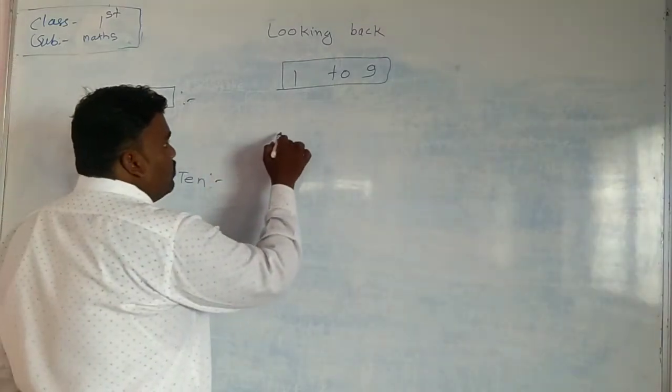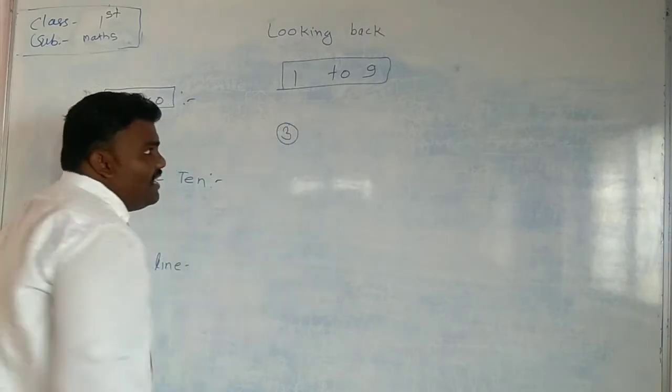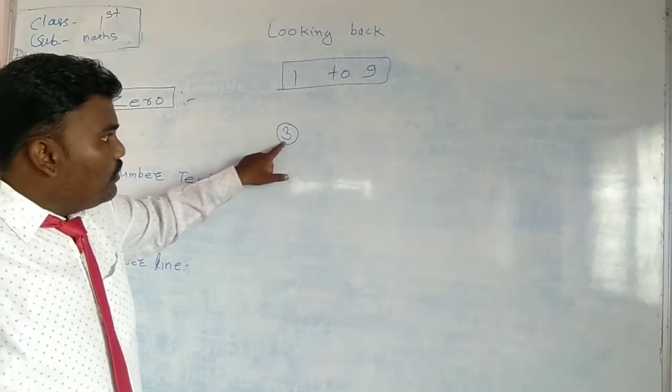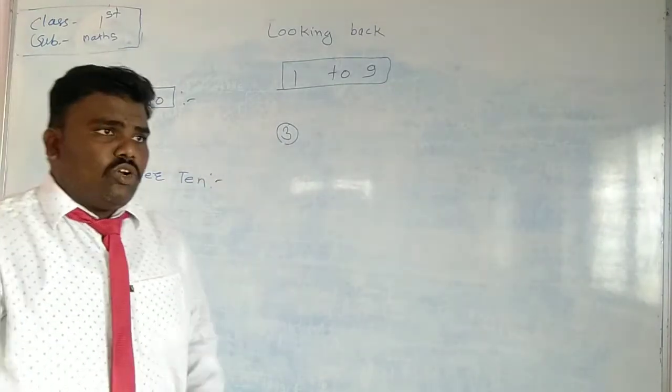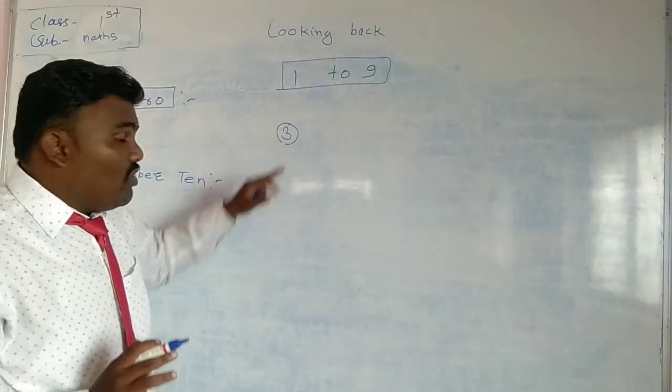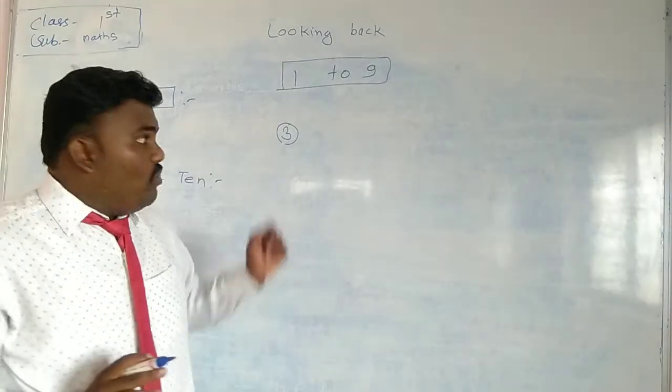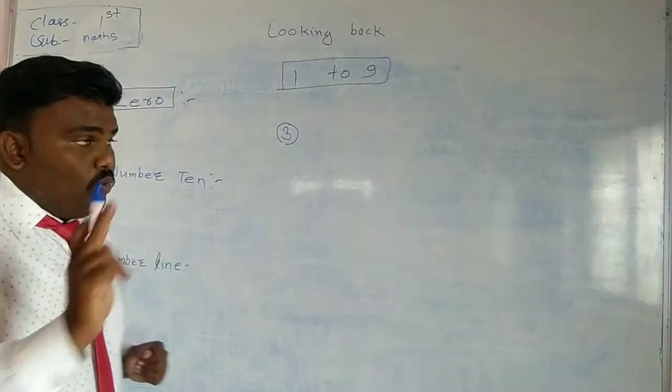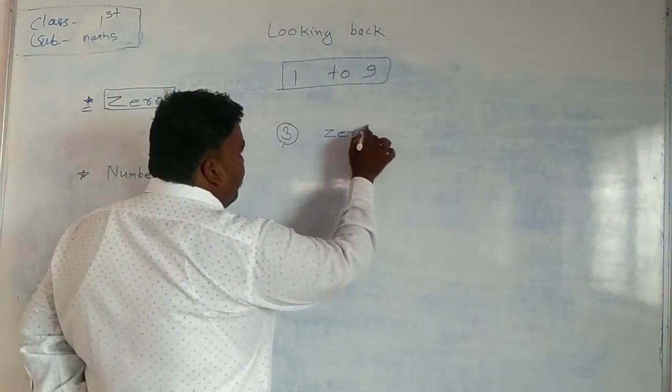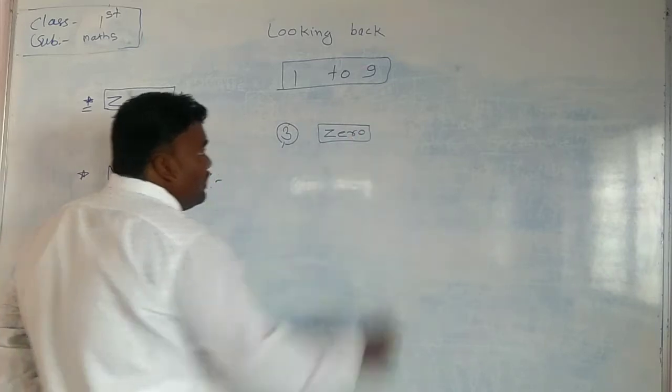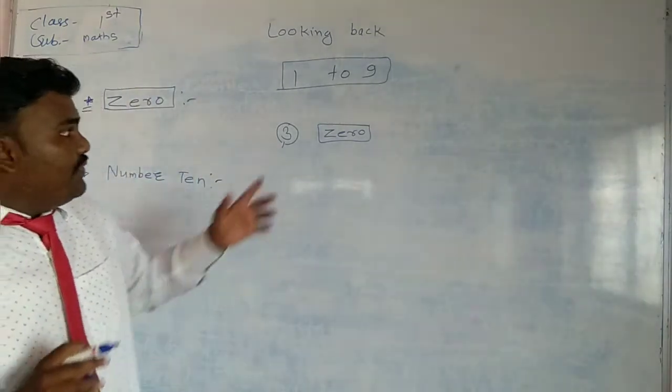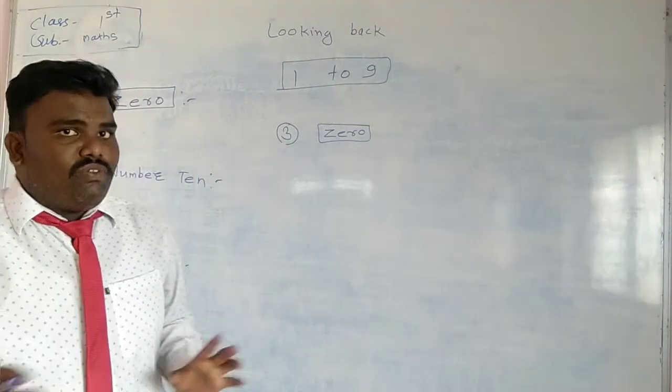Suppose you have 3 chocolates. If you give these all 3 chocolates to your friend, how many chocolates remain? Only 0 chocolates will remain. 0 chocolates will remain. It means nothing. You will have no chocolates if you share all chocolates with your friend.